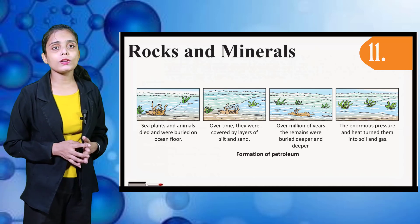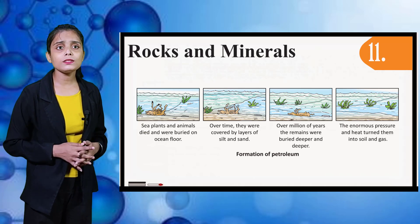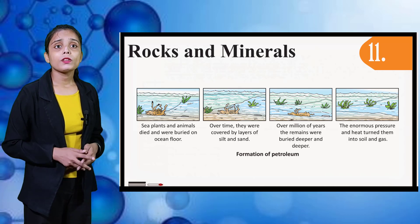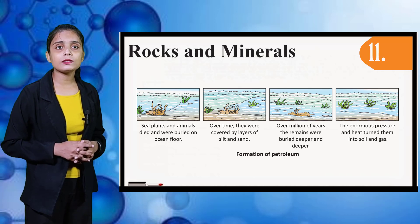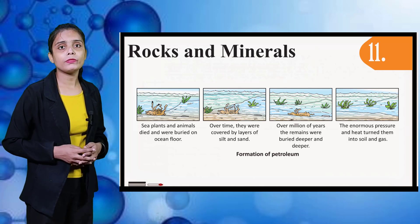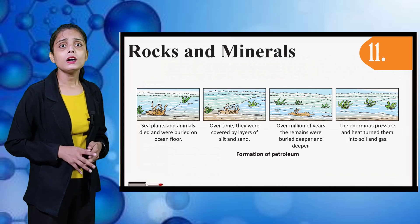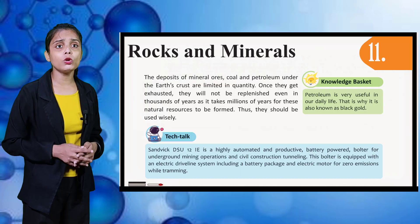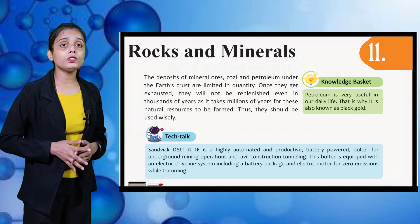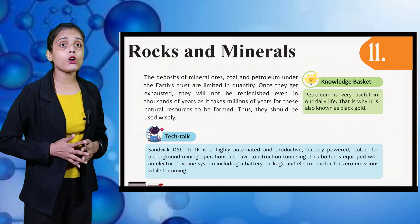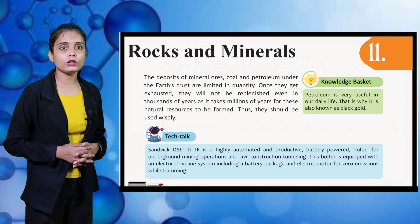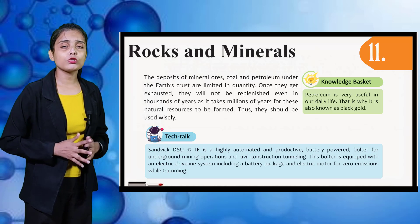Here you can see a picture showing the formation of petroleum. First, sea plants and animals died and were buried on the ocean floor. Over time, they were covered by layers of silt and sand. Then over millions of years, the remains were buried deeper and deeper, and the enormous pressure and heat turned them into oil and gas. The deposits of minerals, ore, and petroleum under the earth's crust are limited in quantity. Once they get exhausted, they will not be replenished, even in thousands of years, as it takes millions of years for these natural resources to be formed. Thus, they should be used wisely.